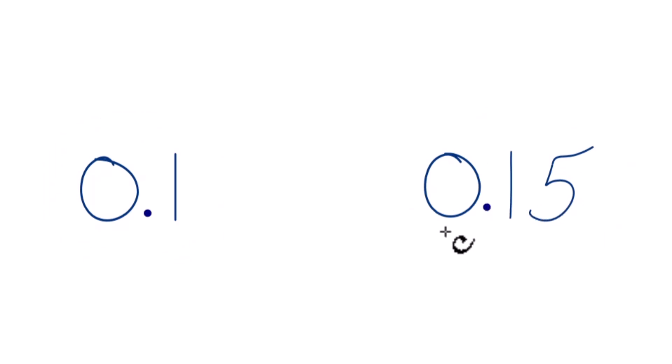What we're going to do is compare the first number after the decimal point. So this is the tenths place. We have 1 for 0.1 in the tenths place, and for 0.15, we also have 1 in the tenths place.